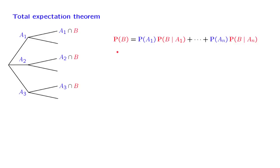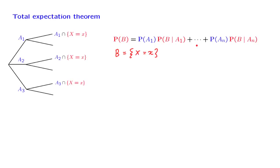Now let us bring random variables into the picture. Let us fix a particular value, little x, and let the event B be the event that a random variable takes on this particular value. Let us now translate the total probability theorem to this situation. First, the picture will look slightly different. Our event B has been replaced by the particular event that we are now considering.